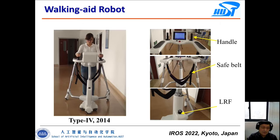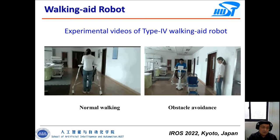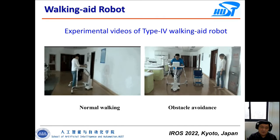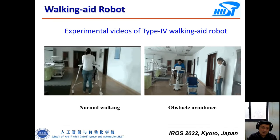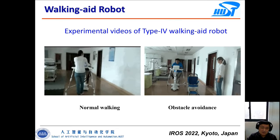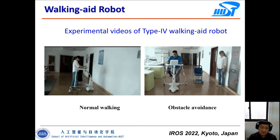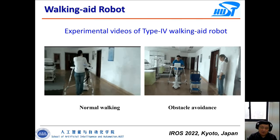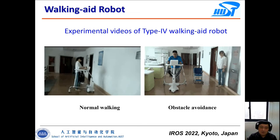In 2014, we designed Type 4 of this robot in cooperation with a company. We added a handle, a safety belt, and embedded a laser range finder to detect obstacles. This Type 4 robot can help people walk normally in open environments, detect dynamic obstacles, plan a safe trajectory, and guide the user to walk along that safe trajectory to avoid obstacles.